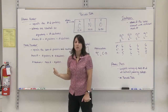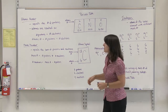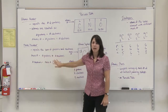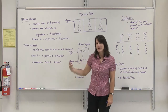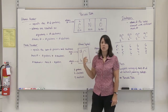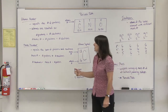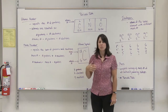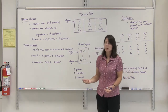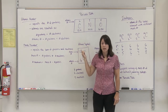Another number we can use to differentiate between atoms is the mass number. The mass number is not found on the periodic table. It is a counted number, and it is the sum of the protons and the neutrons that are in the nucleus. You would have to be given the number of neutrons for that specific atom to determine its mass number; the number of protons you would find on the periodic table.